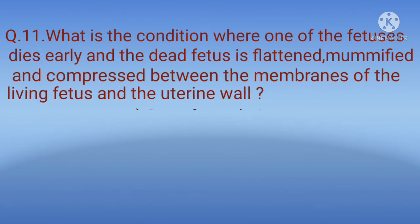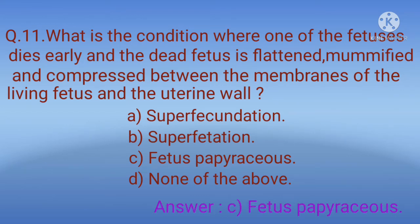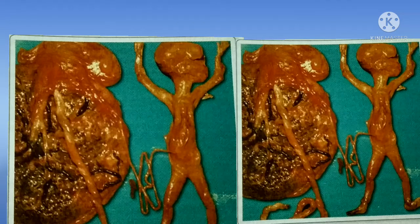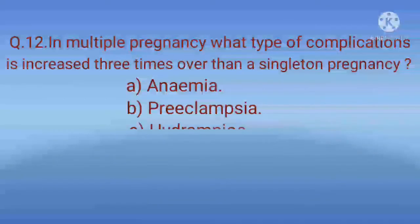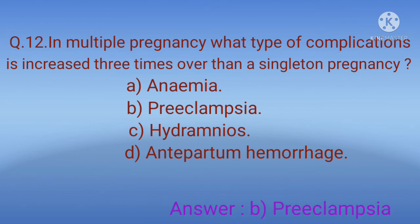Question 11: What is the condition where one fetus dies early and the dead fetus is flattened, mummified, and compressed between the membranes of the living fetus and the uterine wall? Options: A) Superfetation, B) Superfecundation, C) Fetus papyraceus, D) None of the above. The correct option is C, fetus papyraceus, also called compressus. A diagram shows how it looks. Question 12: In multiple pregnancy, what complication is increased three times over a singleton pregnancy? Options: A) Anemia, B) Preeclampsia, C) Hydramnios, D) Antepartum hemorrhage. The correct option is B, preeclampsia.